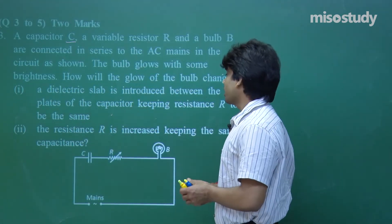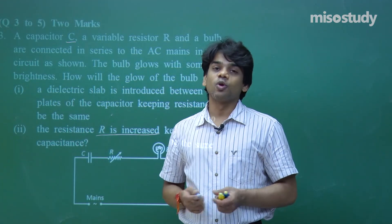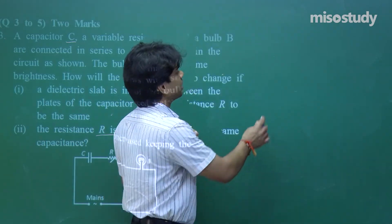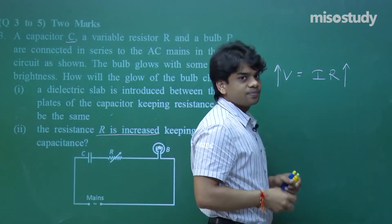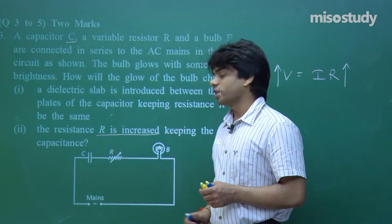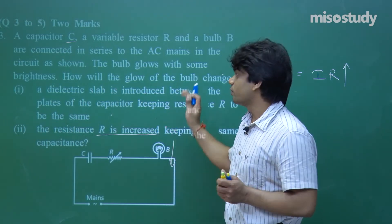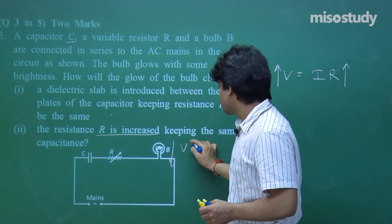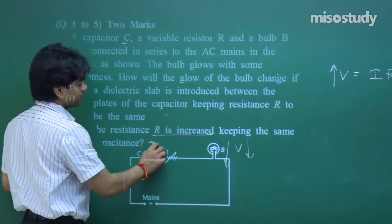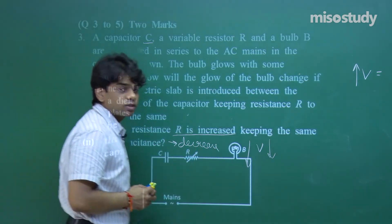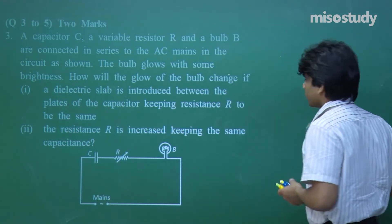For the second part: the resistor R is increased keeping the same capacitance. The voltage across the resistance is V = I·R. If R is increased, the voltage across the resistor increases, hence the overall voltage across the bulb is going to decrease. So its glow is going to decrease. This is a 2-mark question.